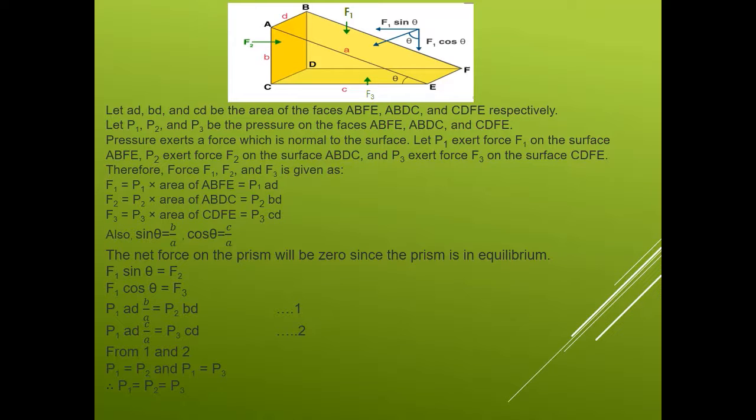Also from the figure we can say that sin theta equals B upon A, and cos theta equals C upon A. Here we are using simple trigonometry.